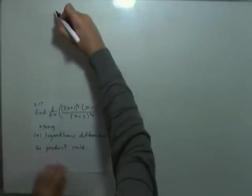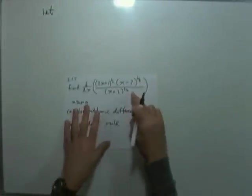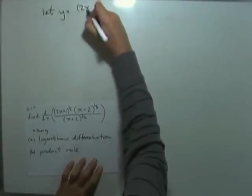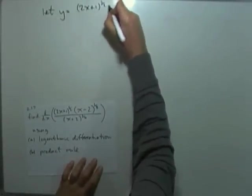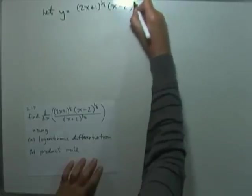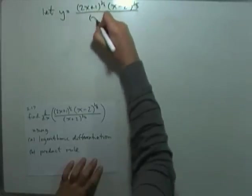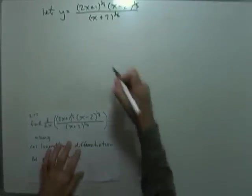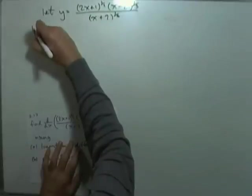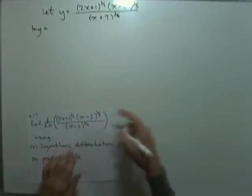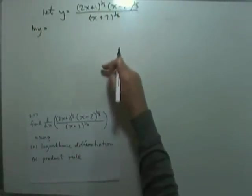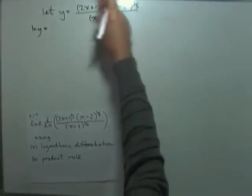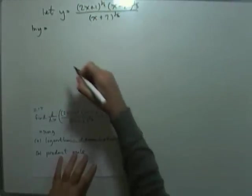For part A, I'll need to refer to that expression again, so I'm going to give it a name — let y equal the whole thing: (2x + 1) to the power of a half, times (x − 2) to the power of a third, all over (x + 2) to the power of a quarter. Taking logarithms of both sides: a product gives a sum of logarithms, a quotient gives a difference, and a power inside a logarithm can come to the front as a multiplying number.